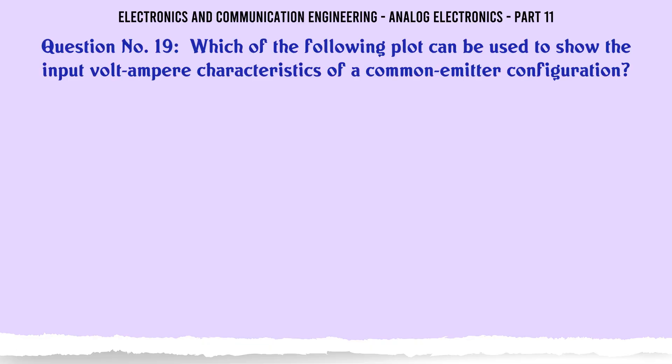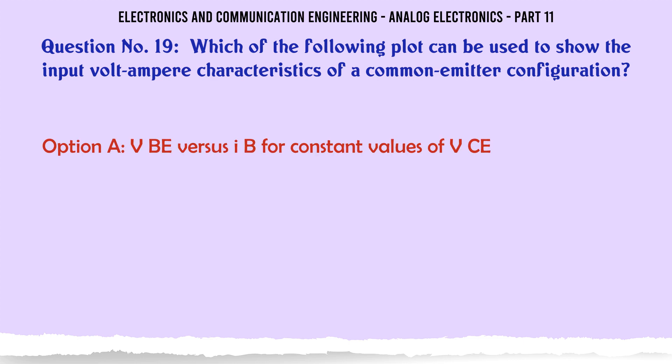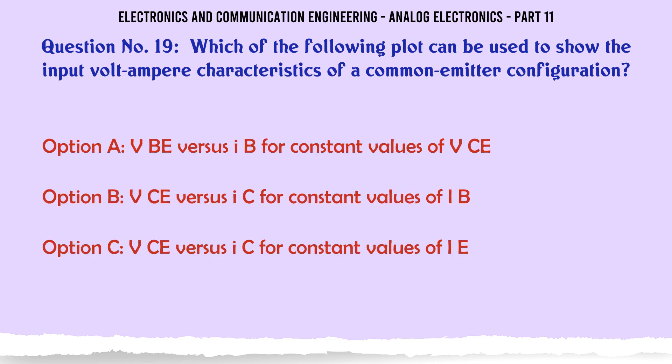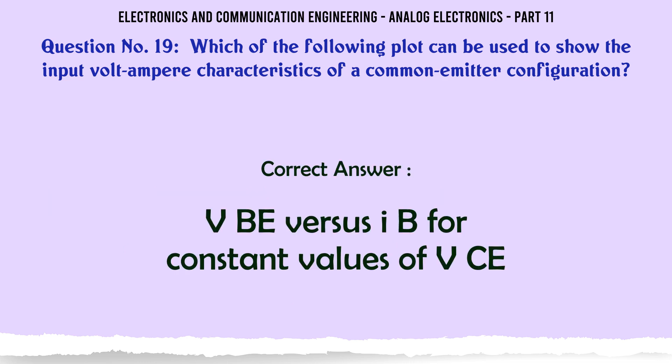Which of the following plots can be used to show the input volt-ampere characteristics of a common emitter configuration? A. VB vs IB for constant values of VCE. B. VCE vs IC for constant values of IB. C. VCE vs IC for constant values of IE. D. None of the above. The correct answer is: VB vs IB for constant values of VCE.